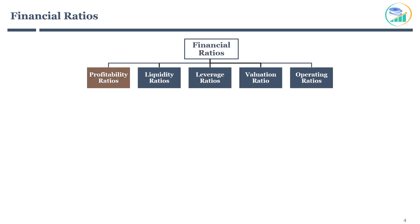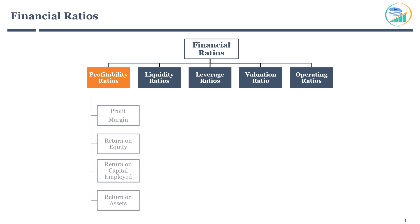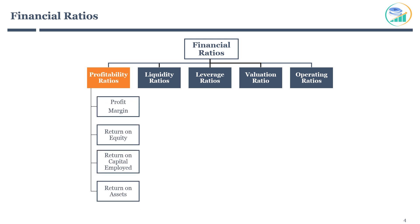Let's start with profitability. As the name suggests, it measures the profitability of a company. It reveals how well a company is making use of its assets to generate profit. There are four main profitability ratios: profit margin, return on equity, return on capital employed, and return on assets.